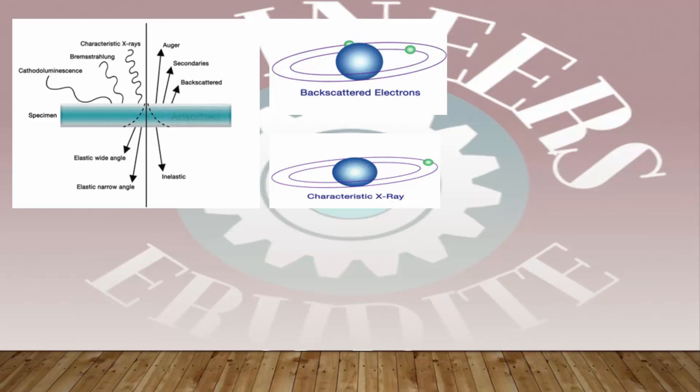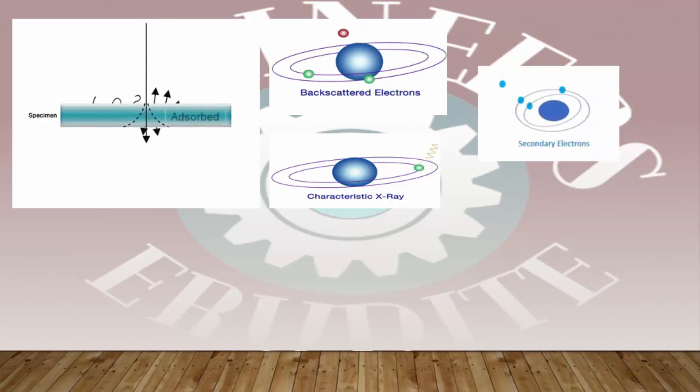The secondary electrons are those electrons when the electrons coming from the electron beam hit the electron in the orbital of the atom or material, it will knock out one of the electron or electrons. That electron which is ejected from the material are called secondary electrons.